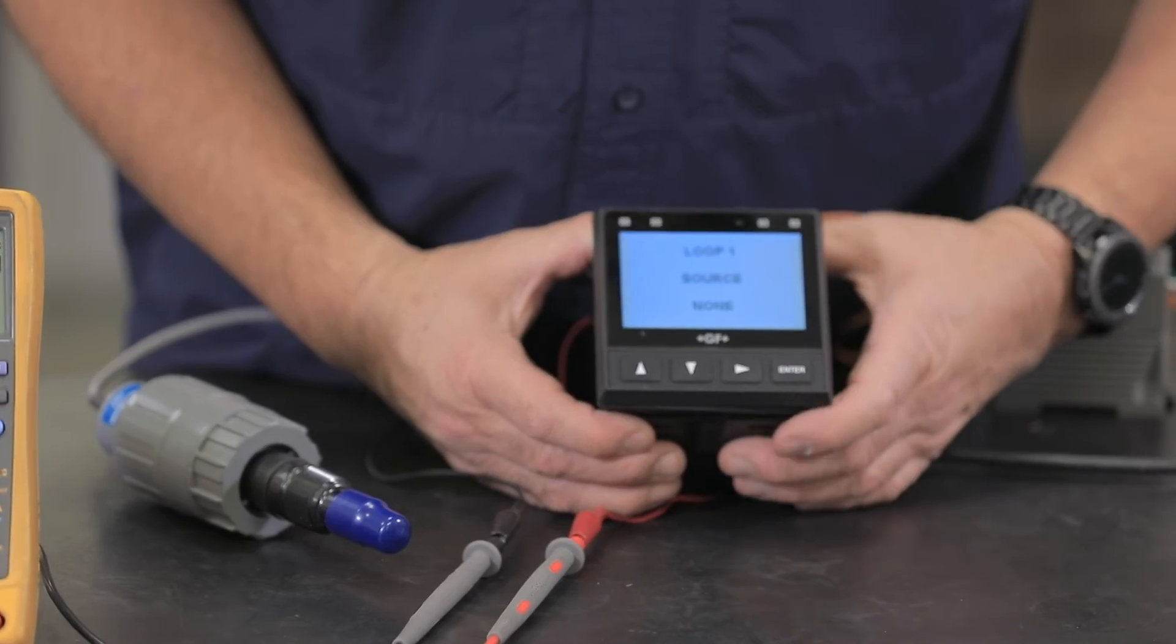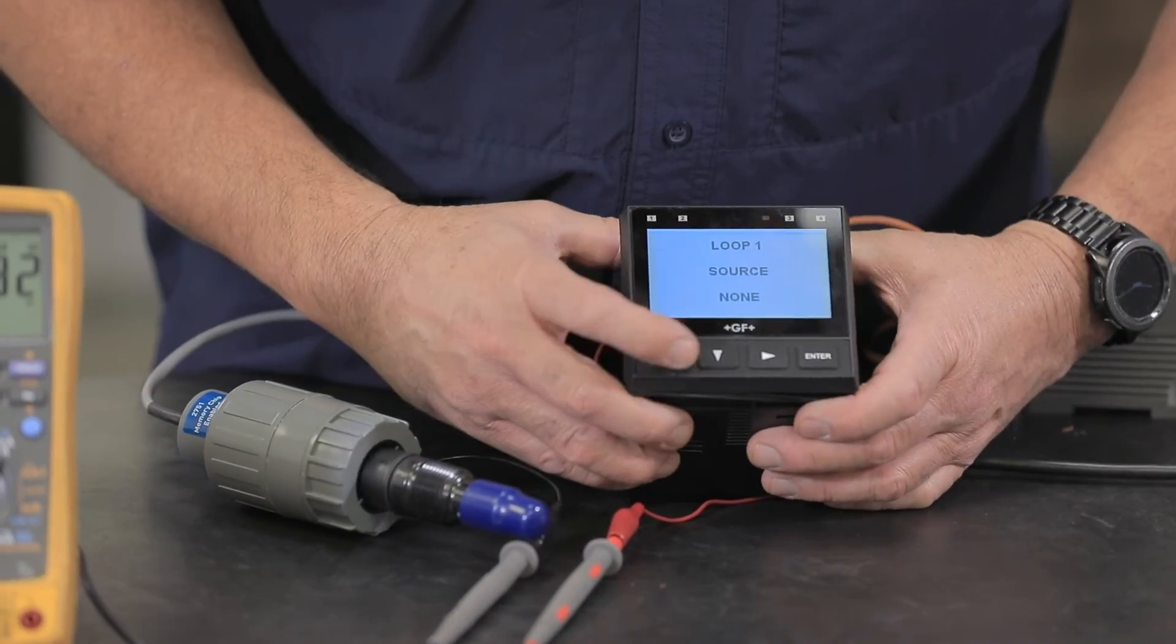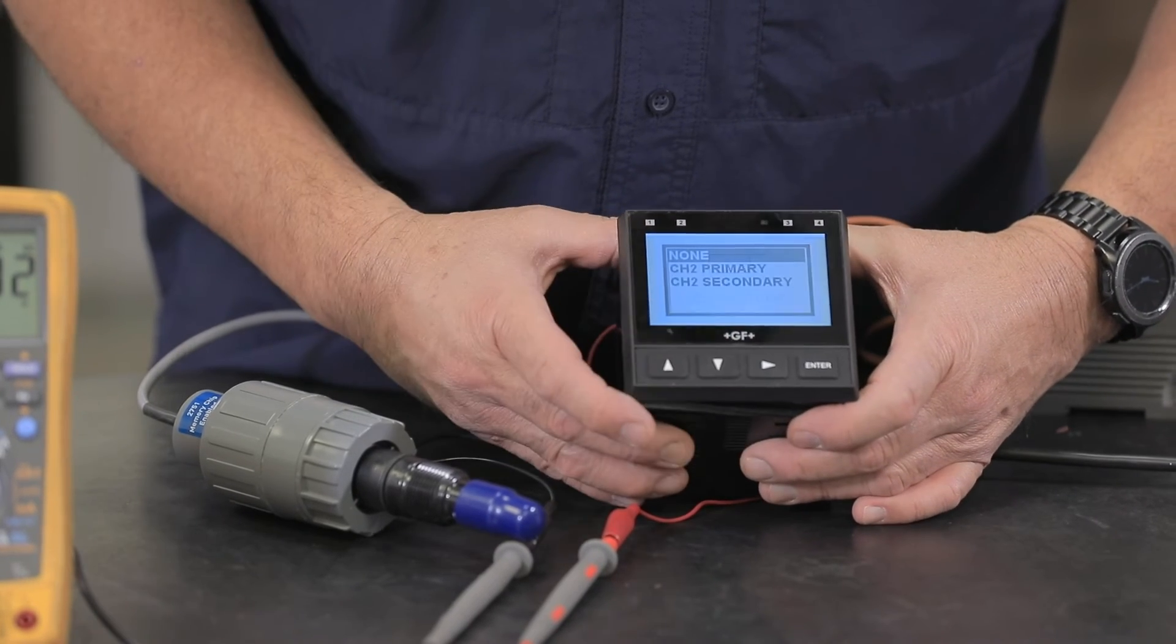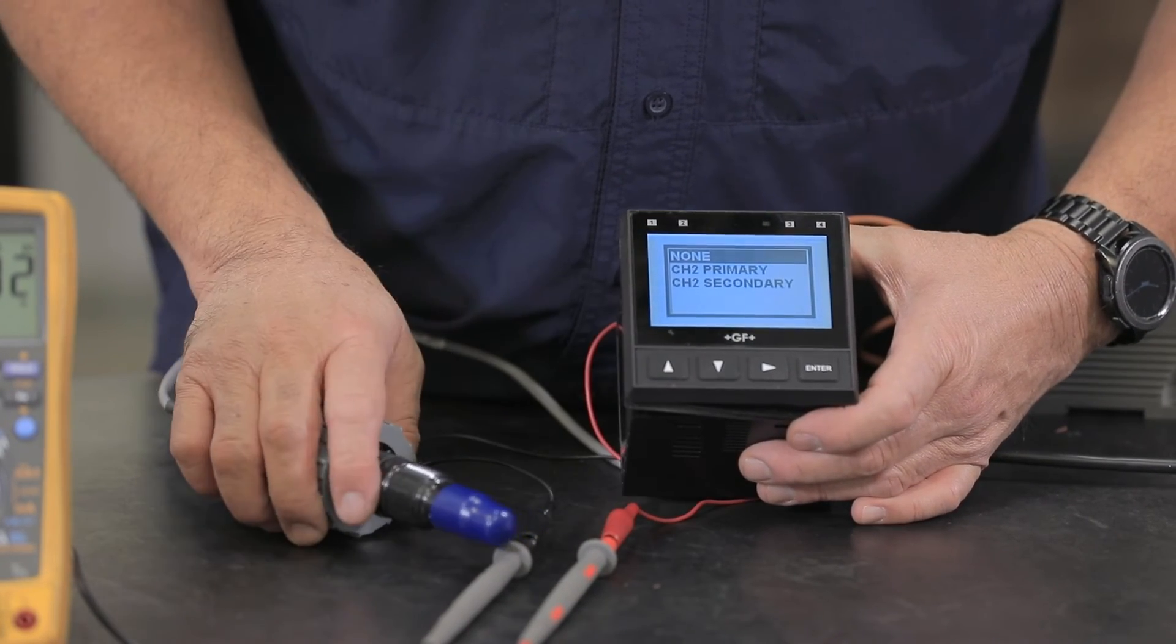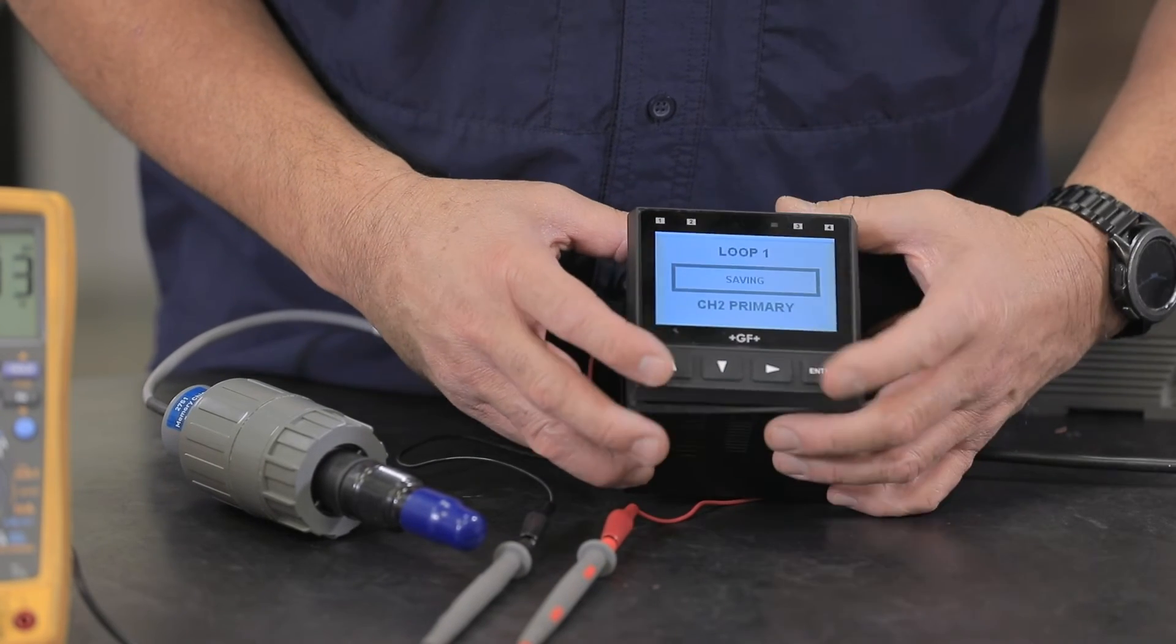Loop one source is none. We want loop one to be our pH, so we're going to choose with the right arrow, enter our code. We're going to choose channel two primary. Press enter. Save it.